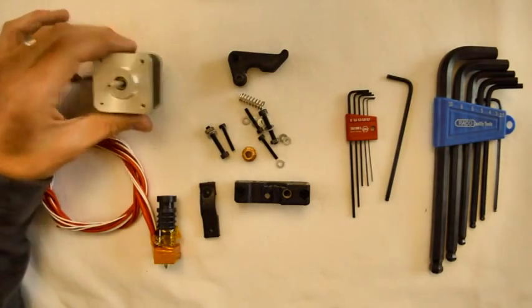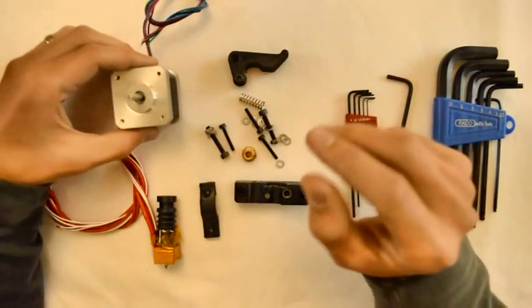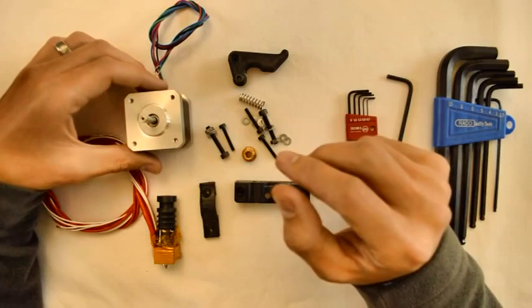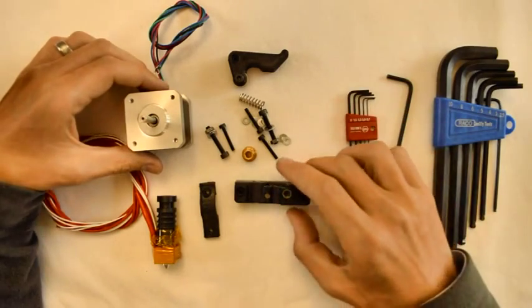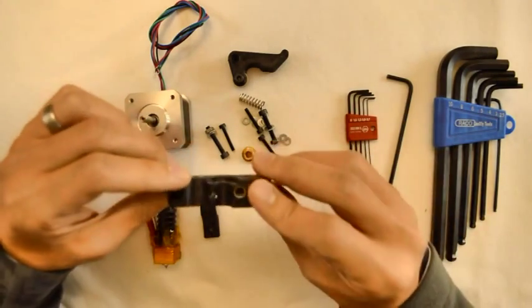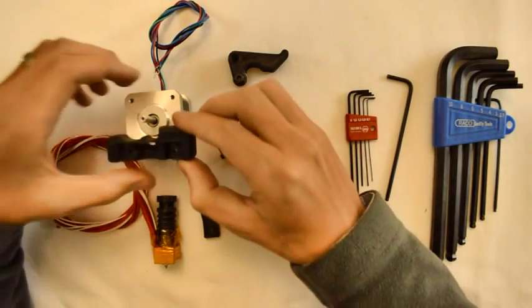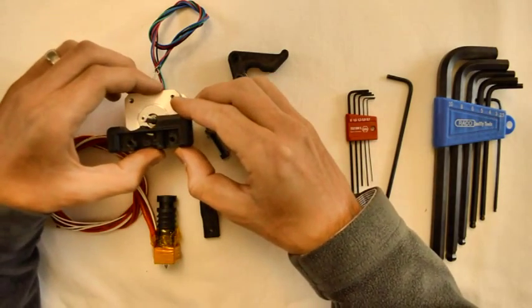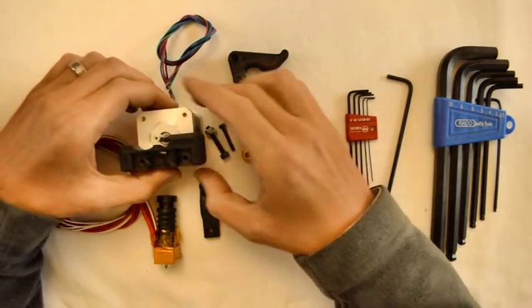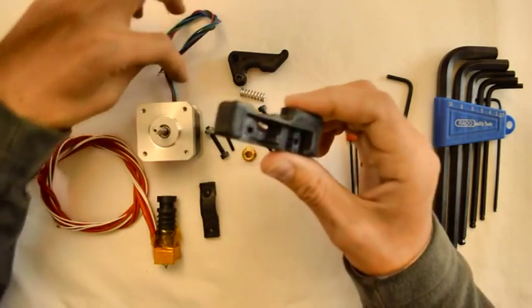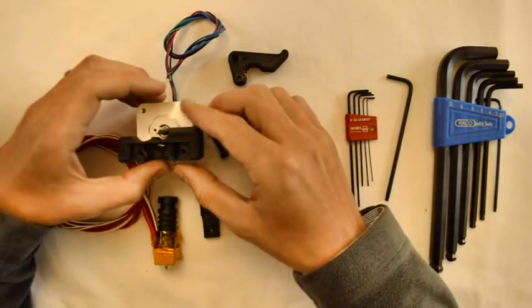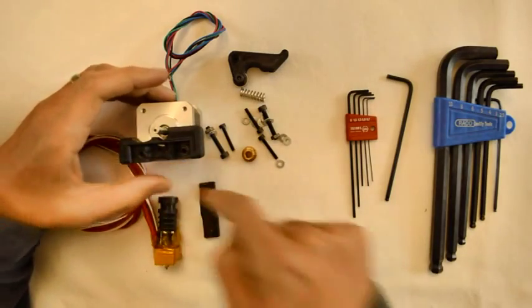Now we will assemble it to the stepper motor. The stepper motor serves as the base or the structure of the extruder. We'll fit onto the stepper motor like that. I like to keep my wires at the top. This will be the base of the extruder.